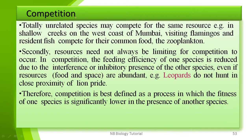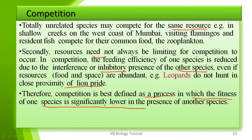Competition occurs when totally unrelated species compete for the same resources. For example, the cow and the deer compete for the same food — grass. On the shallow creek on the west coast of Mumbai, visiting flamingos and resident fish compete for their common food, zooplankton. Resources need not always be limiting for competition to occur — the feeding efficiency of one species is reduced due to the inhibitory presence of the other species, even if resources are abundant. For example, leopards do not hunt in close proximity of lion prides.